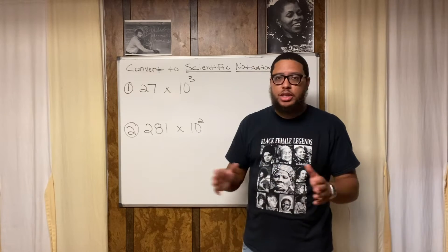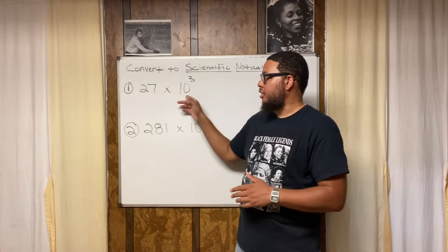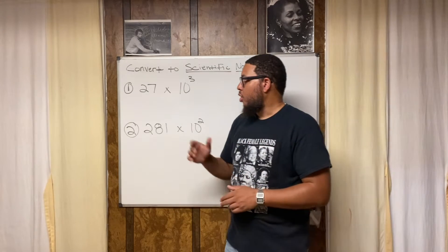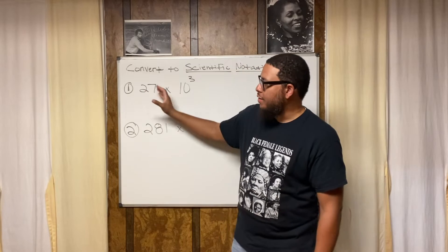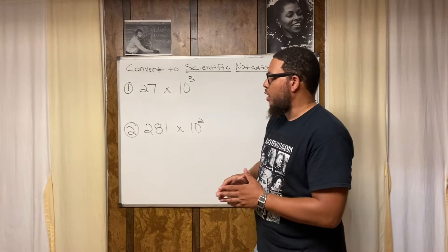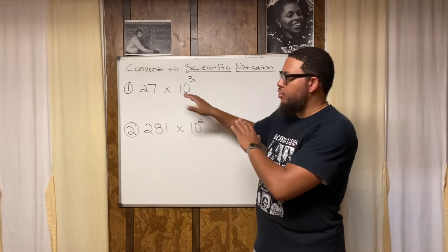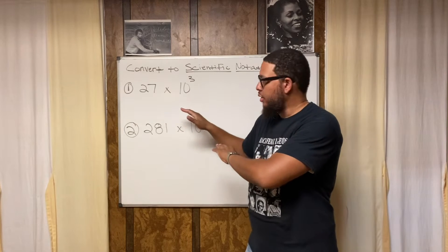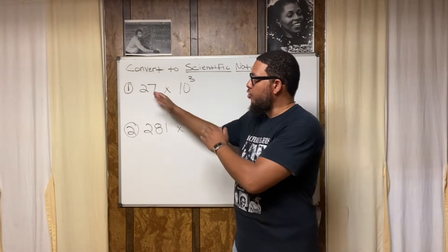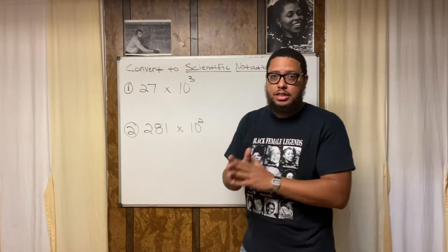27 is not between 1 and 10. 27 is greater than 10, so therefore this is not scientific notation. But have no fear — we can work with that. All we've got to do is put 27 itself into scientific notation. So what you do is leave 10 to the third alone for a minute, let it chill to the side, and focus your attention on 27.